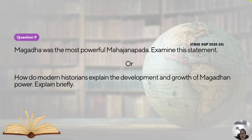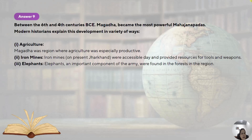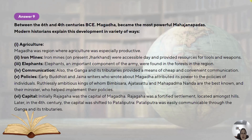Magadha was the most powerful Mahajanapada. There were 16 Mahajanapadas, and Magadha, which is in present-day Bihar, was the most powerful. Between the sixth and fourth centuries BCE, Magadha became the most powerful Mahajanapada for several reasons. The first reason is agricultural prosperity — Magadha was a region where agriculture was very productive.